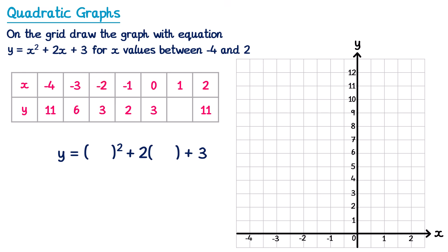The next two values have already been done for us, so we can move along to when x is equal to 1. We put 1 inside those brackets. Y equals 1 squared which is 1, plus 2 lots of 1 which is 2, and then plus 3. So we've got 1 plus 2 plus 3 which is 6, so we put 6 inside the table.